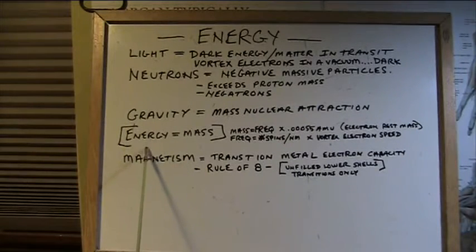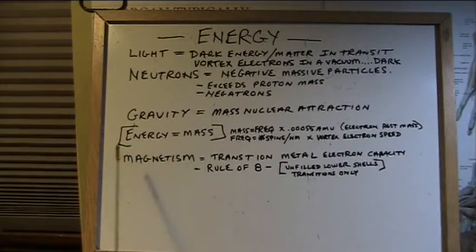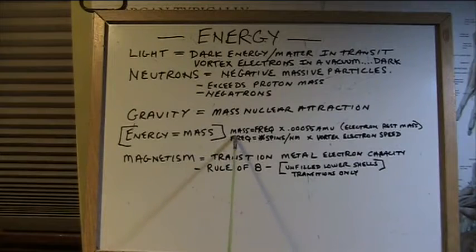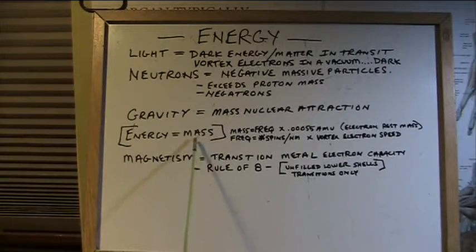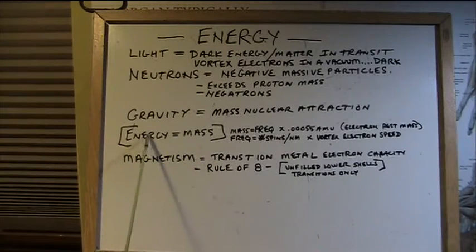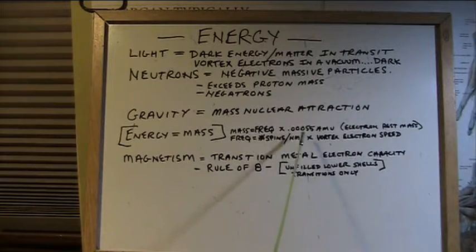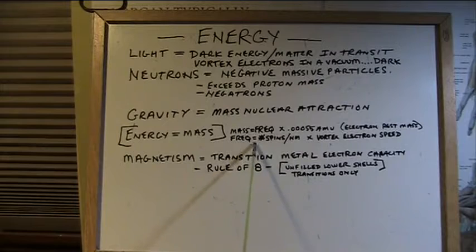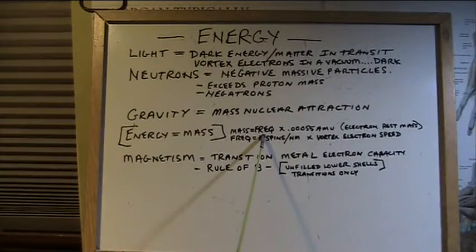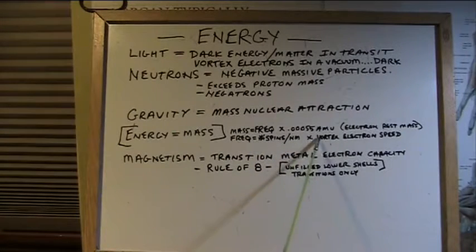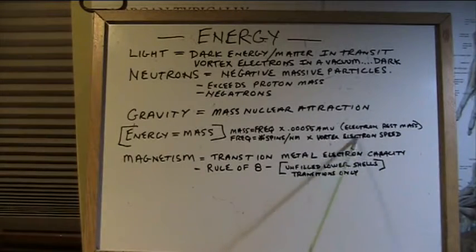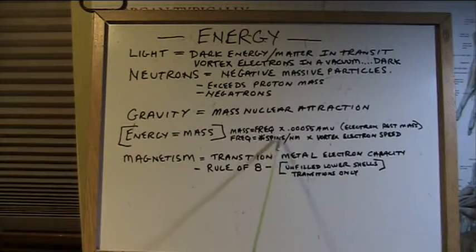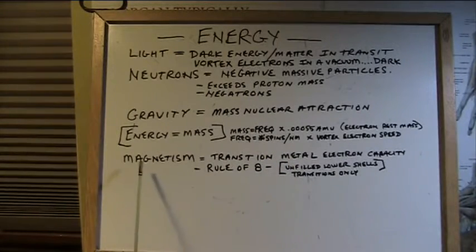Now, energy. Energy is mass. That's it. And what is mass? Mass is frequency of spin. These are vortex electrons. They spin off the sun as energy. The mass of that energy is what determines the quantity of that energy. The mass is nothing more than the frequency of spin times the weight of an electron, the resting mass, which is 0.0055 atomic mass units. So you've got mass equals frequency. How do you determine the frequency? The frequency is the number of spins in a nanometer times the vortex electron speed. So this is where you get into the speed of light. If that is going 186,000 miles a second, then it will be a certain number of spins in that distance.